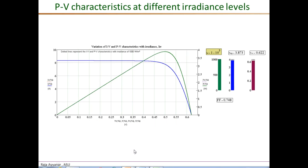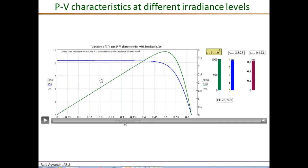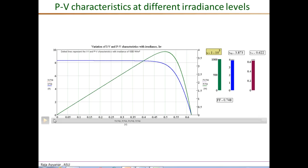Next we look at the effect of environmental conditions on the power-voltage curve, starting with the effect of solar irradiance level. The PV cell was modeled in MathCAD and the irradiance level, denoted IRR in watts per square meter, was varied smoothly from 1000 down to 200 W/m². For each case the corresponding power-voltage curves are plotted, and for reference the curve at maximum 1000 W/m² is always shown, along with the maximum power PMP, open circuit voltage VOC, and fill factor for each irradiance level.